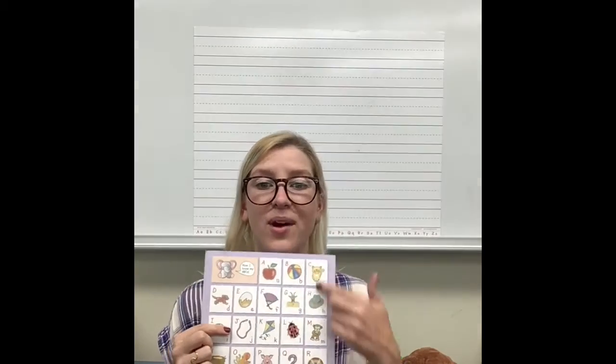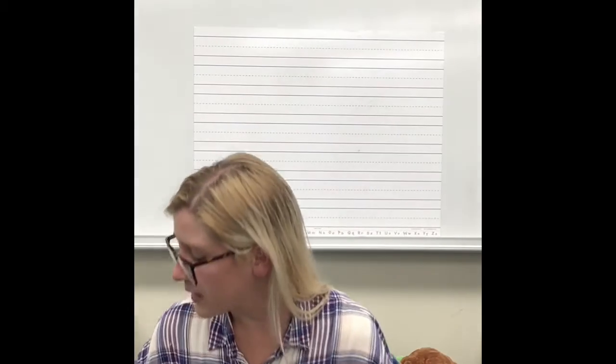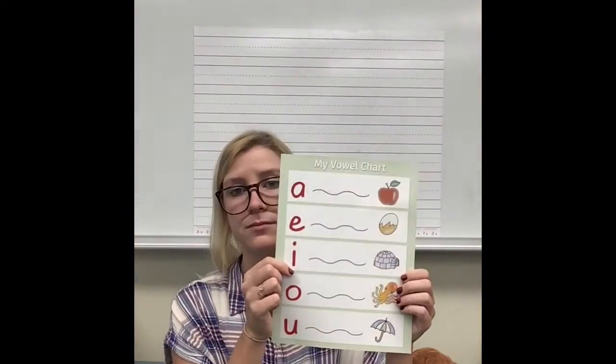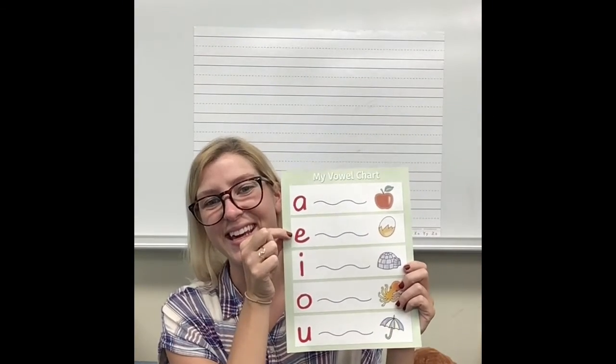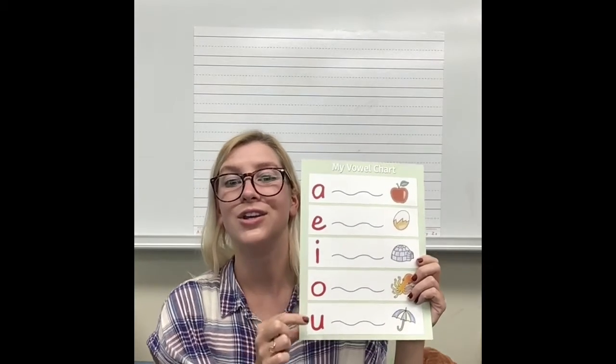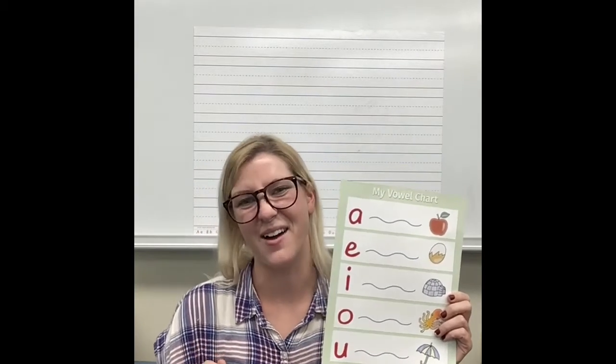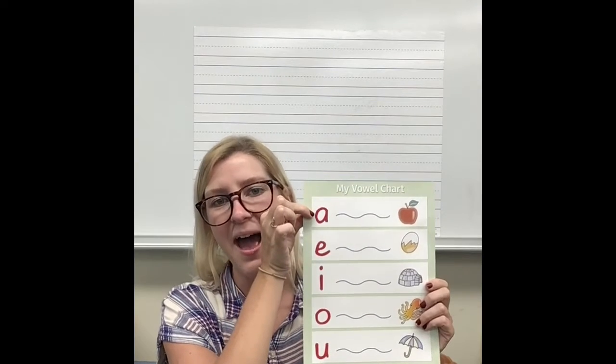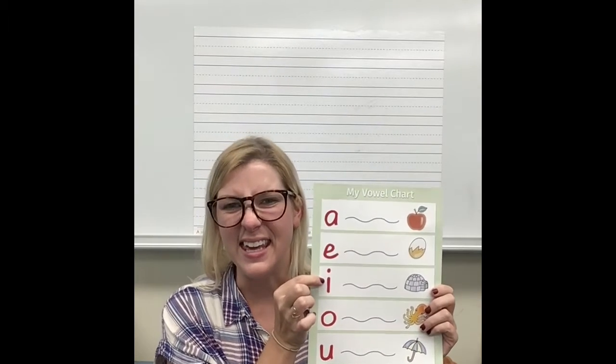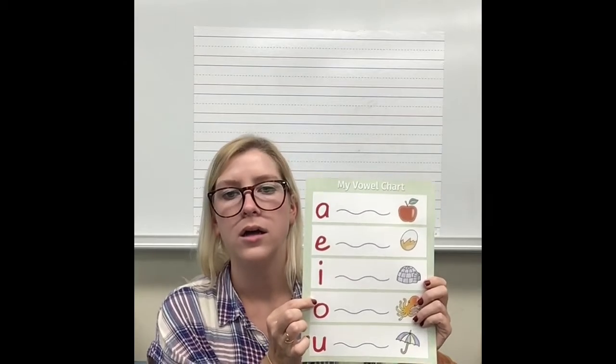Those are all of our letter names and sounds, but there are some very special letters in our alphabet. Remember that there are two types of letters — they're called consonants and vowels. We only have five vowels; all of the rest of the alphabet are consonants. Let's look at those five vowels: A, E, I, O, U. Now let's read the sounds that the vowels usually make: A, E, I, O, U.